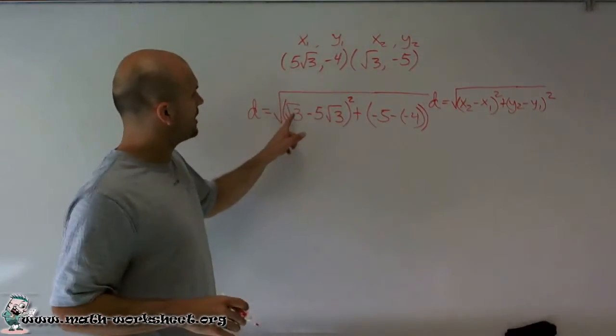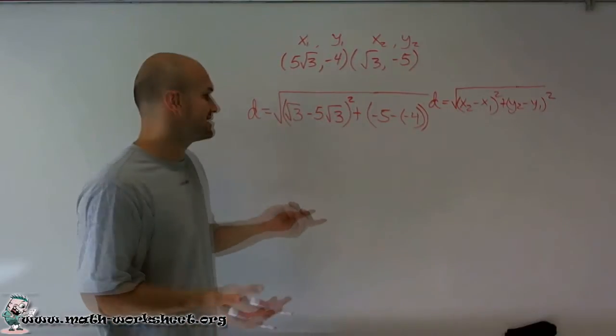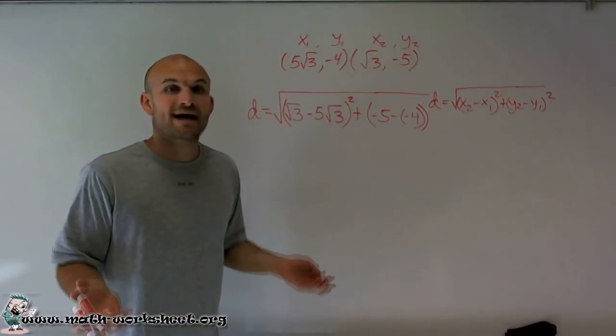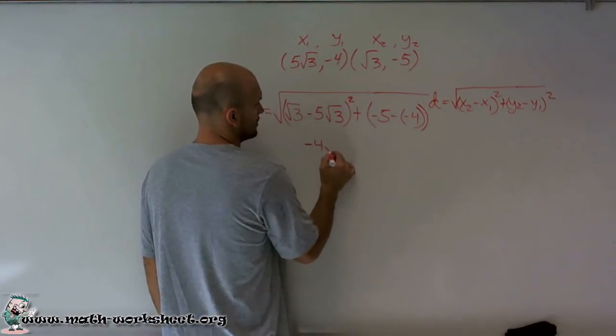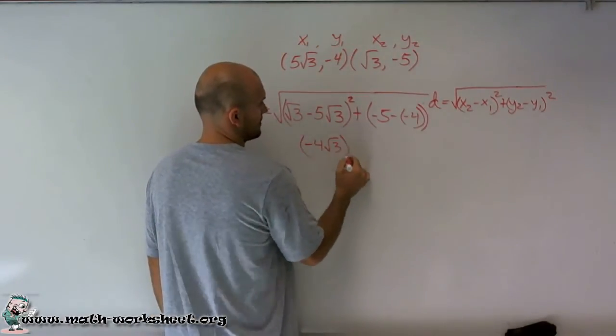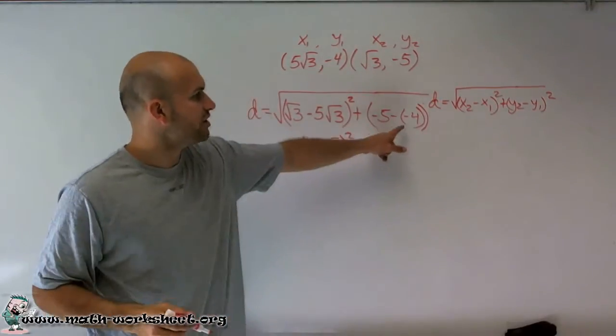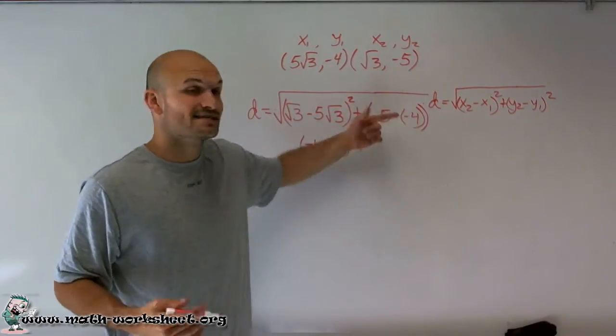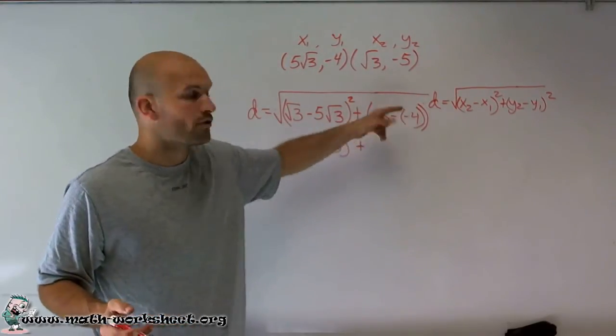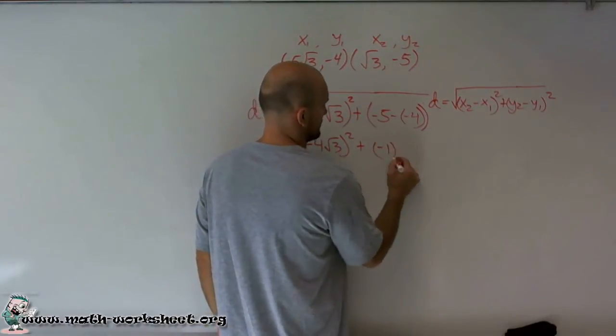So here what we have is square root of 3 minus, so pretty much the same thing as just kind of like 1 minus 5, which is going to be a negative 4 square root of 3 squared, plus negative 5 plus a negative 4. Well, I'm sorry, negative 5 minus a negative 4. That's a double negative. It's going to turn to a positive 4. Negative 5 plus 4 is a negative 1 squared.